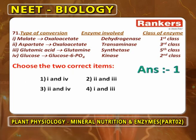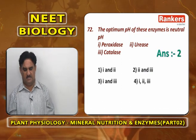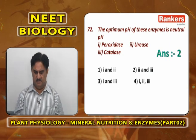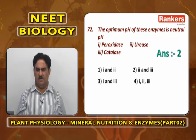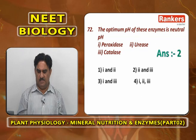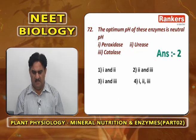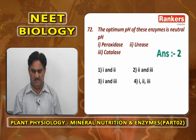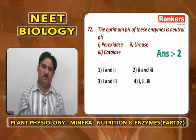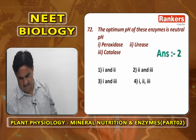Enzymes with neutral optimum pH (pH 7): urease and catalase both have optimum pH of 7. Peroxidase has optimum pH of 5 (acidic), pepsin has pH 2 (more acidic), and trypsin has pH 8 (basic). So the enzymes with neutral optimum pH are urease and catalase — answer is options 2 and 3.